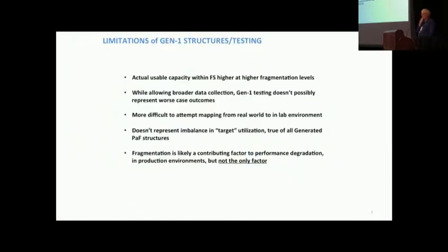There's a limitation on how we're generating population and fragmentation in the laboratory today. Our actual usable capacity within the file system is higher at higher fragmentation levels. While this allows us, the simplistic method, to collect more data in a shorter period of time, it doesn't represent the possible worst-case scenario. If you've got a luster production file system and you run it for 12 months and you've had numerous people running their applications, removing files, and the files are all different sizes, I can assure you what we've done in the laboratory here does not represent the worst-case scenario you could get into in the real world. And it doesn't represent an imbalance in target utilization. We have two OSTs in our simple lab setup. We don't have 300, 400, 500, 1,000 OSTs.